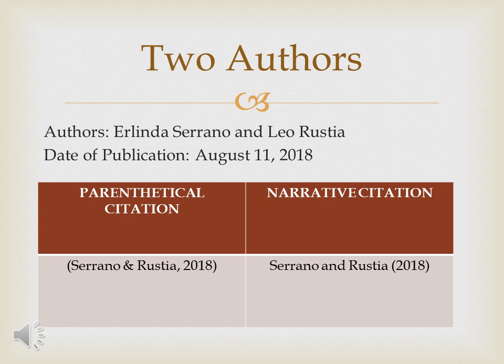We have authors Erlinda Serrano and Leo Rustia, and the date of publication was August 11, 2018. We also have parenthetical and narrative citation. For two authors in parenthetical citation, it looks like this: open and closed parenthesis with both authors included. You don't have to put their full names — only their surnames: Serrano and Rustia, comma, then the date of publication, 2018.